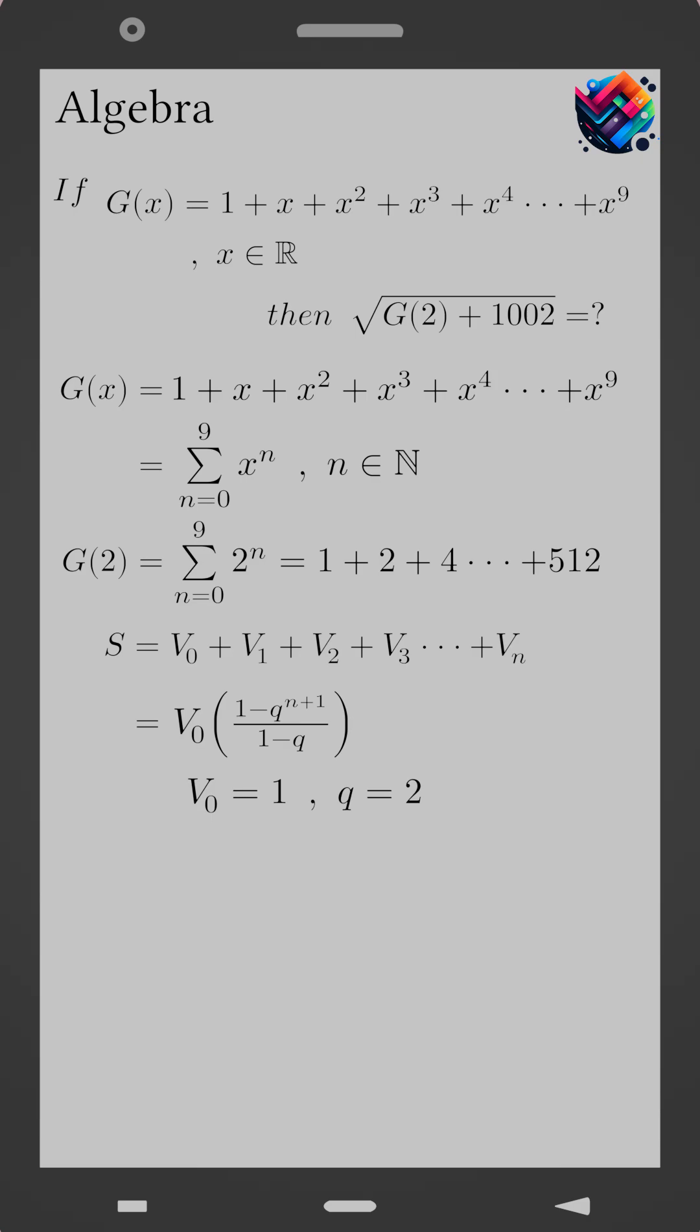Using the formula for the sum of a geometric series, g of 2 equals 1 times 1 minus 2 to the power 10 over 1 minus 2. This simplifies to g of 2 equals 1023.